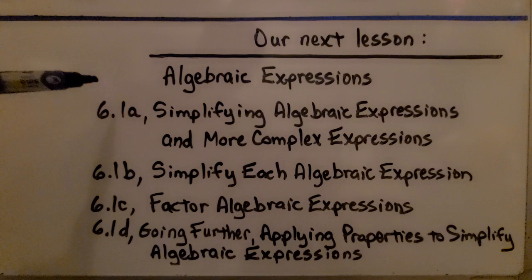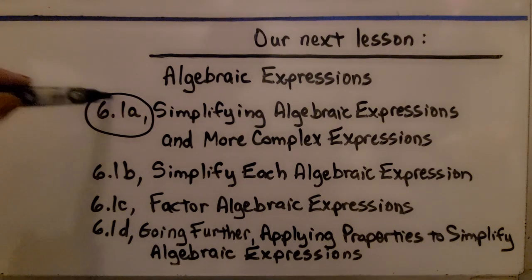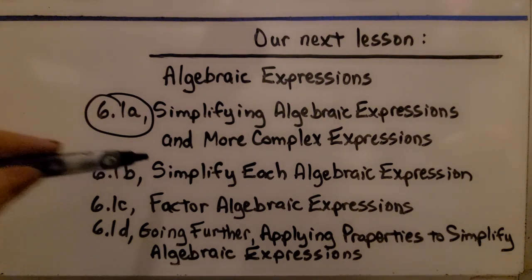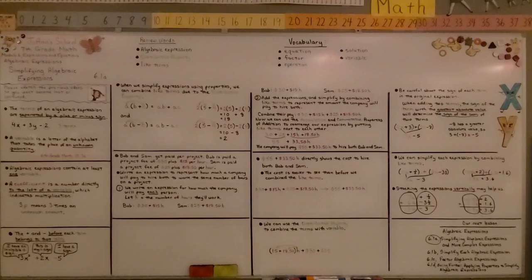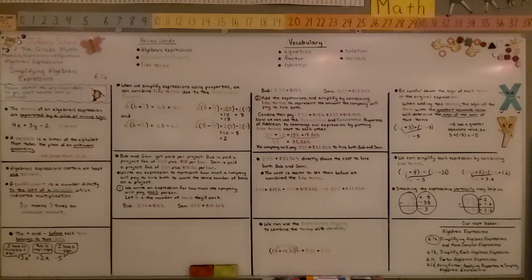Okay, so that was simplifying algebraic expressions and we're finished. We're going to be moving on to 6.1b and we're going to simplify each algebraic expression. Remember that each term of an algebraic expression is separated by a plus or minus sign. And remember that the plus and minus before each term, to the left of each term, belongs to that term. Have a wonderful day. I hope everything is going great for you and I hope you join me for the next part of the lesson.